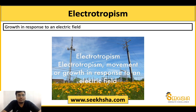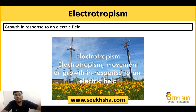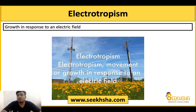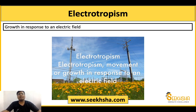Electrotropism is the plant's growth response to an electric field. If a plant or flower is placed in an electric field, it will start to grow in that direction. This is called electrotropism — a very simple concept to understand.